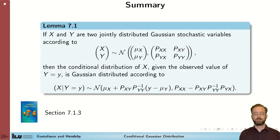To summarize, we have studied lemma 7.1 from the textbook. A lemma that is used several times throughout the course. It gives us an expression for the conditional distribution of X given Y, if X and Y are jointly distributed Gaussian stochastic variables according to this form up here. Read more about this in section 7.1.3 in the textbook.